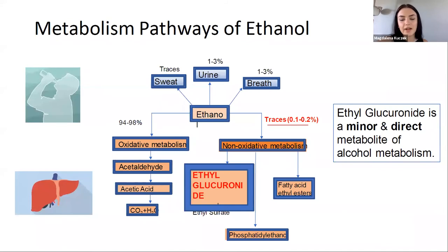My project was to develop and validate a fast and simple method for the determination of ETG metabolites in urine by liquid chromatography mass spectrometry. When an individual consumes alcohol, a vast majority of it is excreted by oxidative metabolism. The most minor pathway of excretion leads to the production of ETG. Because so little of this analyte is produced and it persists for so long, it was vital that the method be of utmost sensitivity for detection.